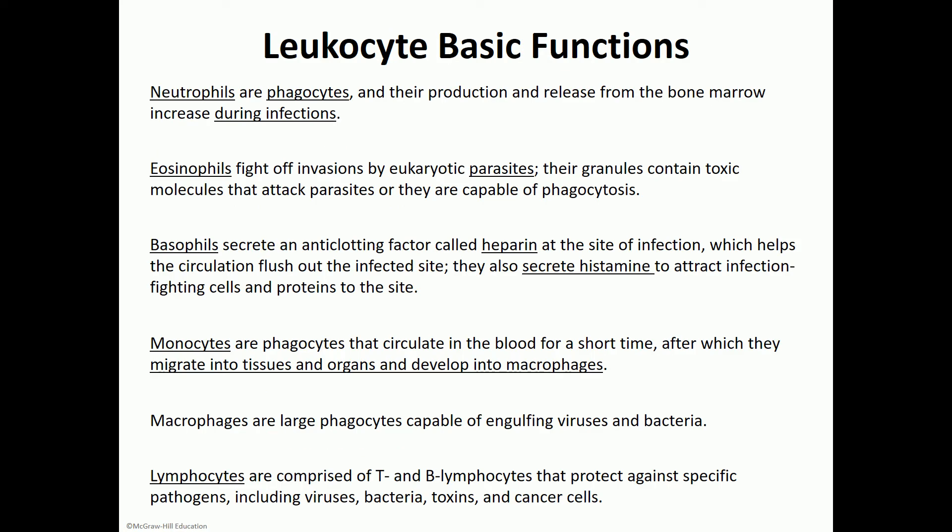The basic functions of leukocytes: they're all involved with immunity, but each cell tends to have a more specific action. Your phagocytic cells are basically the M&Ms — M for macrophage, N for neutrophils, and the second M for monocytes. Neutrophils are the first responders, so as soon as somebody has anything going on — whether it's an infection or inflammation — the first cell to arrive would be neutrophils.